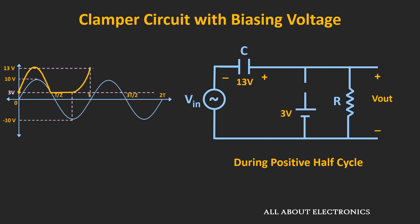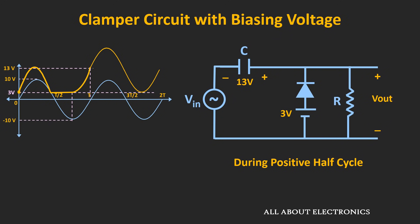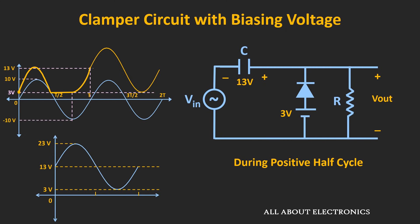During the next positive half cycle, this diode will still remain reverse biased, because the voltage at the cathode is equal to Vin plus 13V, and as Vin is positive, the voltage at the cathode will be more than the anode. During this time, the output waveform Vout will be equal to Vin plus 13V. During the negative half cycle also, this diode will still remain reverse biased, and this entire waveform will get DC shifted by 13V. So in a steady state condition, the output waveform will look like this — the entire waveform has been DC shifted by 13V.